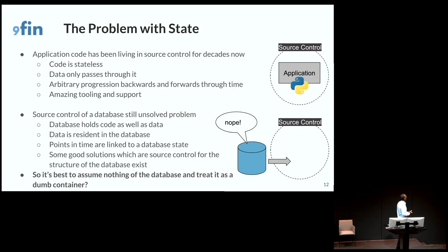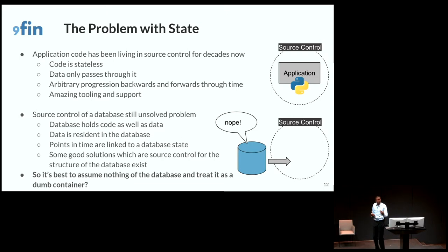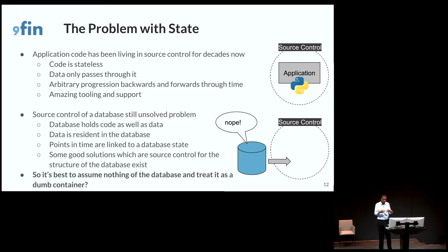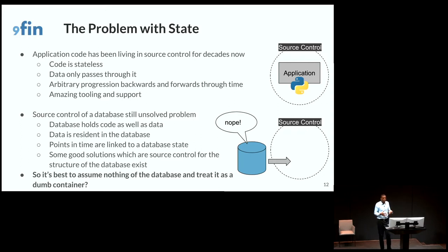Now, let's talk about state and the problem of state. Application code has been in source control for a long, long time — we have won the battle against getting people to use source control. Source control is the standard and everyone's comfortable with it, be it Git, Subversion, Mercurial, whatever your flavor. That's helped by the fact that application code — Java, Python, any application language — is stateless in the sense that data just transiently passes through it. It doesn't reside in it, which means you can arbitrarily go backwards and forwards in time, traversing your history tree to get back to a known state. And there's amazing tooling and support for that type of development environment.